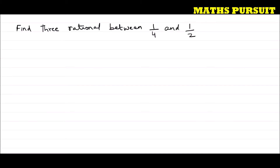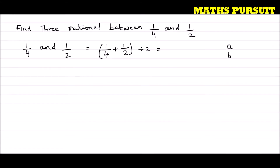Here the two numbers are 1/4 and 1/2. In order to find out the mean, we need to add these two numbers and then divide by 2. If the given numbers are a and b, then their mean is (a + b) / 2.